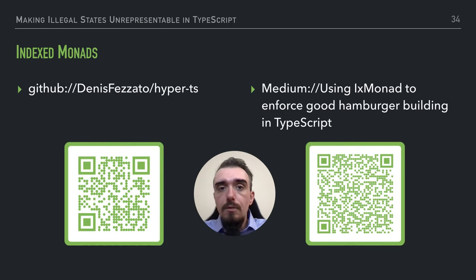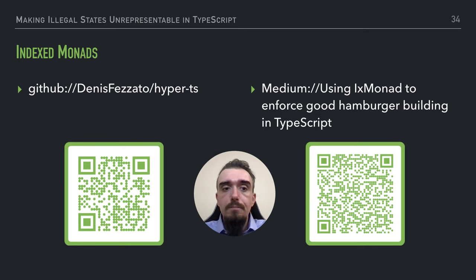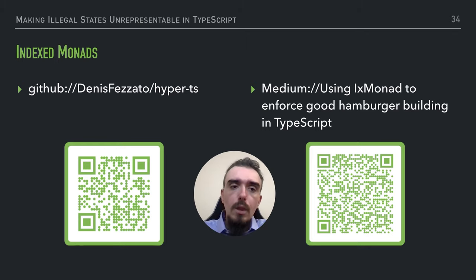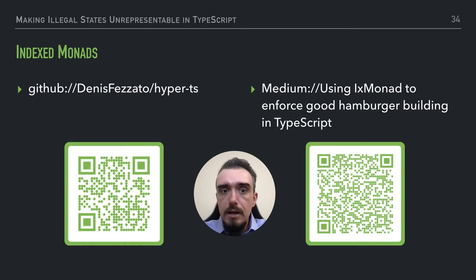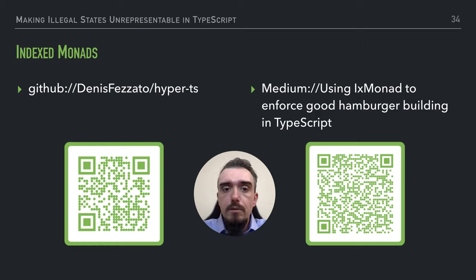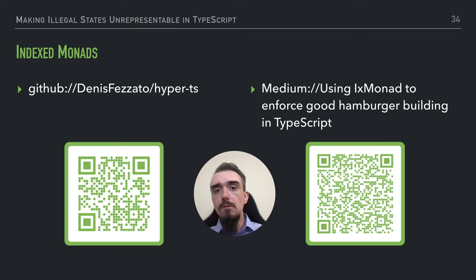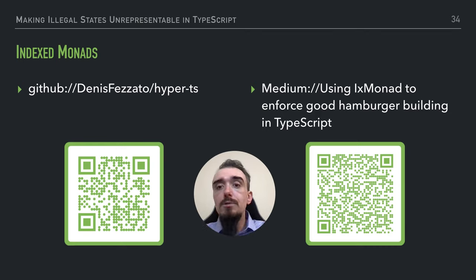I suggest for those who became interested in indexed monads to take a look at two resources. The first is an incredible library by Denis Firsov and Julien Cantot called Hyper-TS, which is a port of PureScript's library called Hyper — a web server that uses indexed monads to capture different things, such as ensuring that you have set all required headers before sending the response body. Another example is a Medium article about forcing the building of a good hamburger, which I've briefly shown in this presentation, but which dives deeper into indexed monads and how to use them in TypeScript.